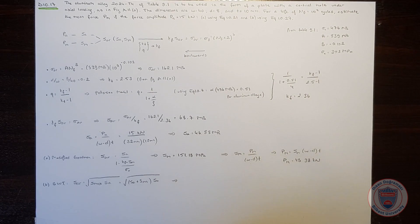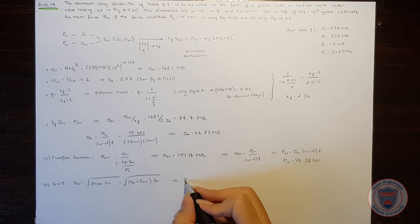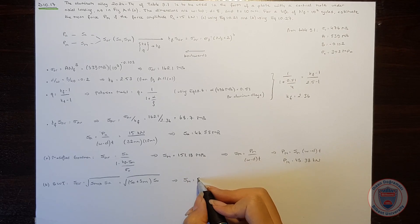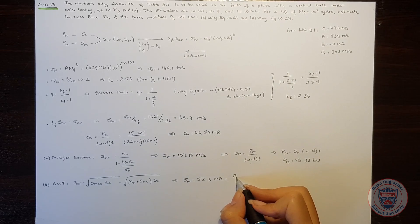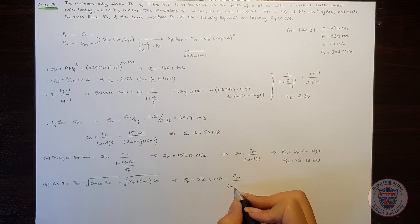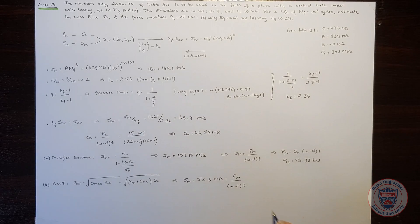And when we make the computations, we will see that SM is equal to 53.8 MPa. And we already know that it is equal to PM over W minus D times T, so that PM becomes 17.2 kN.